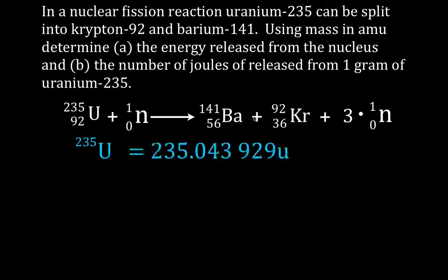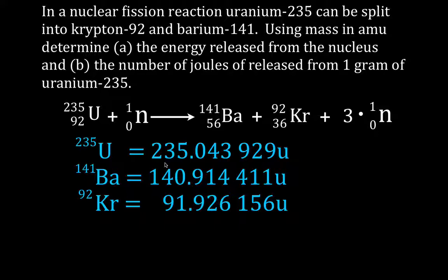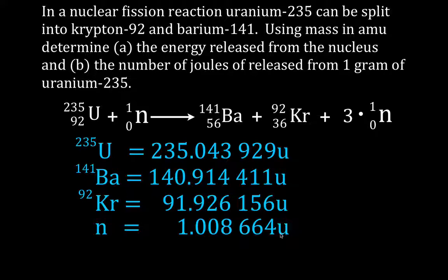You simply go to the internet, a table, or use values given to you — the mass in atomic mass units of uranium-235, barium-141, krypton-92, and the neutron. These values are all in atomic mass units and are carried out to six decimal places, because the binding energy and the mass defect are going to be quite small. So we have to use these exact values.